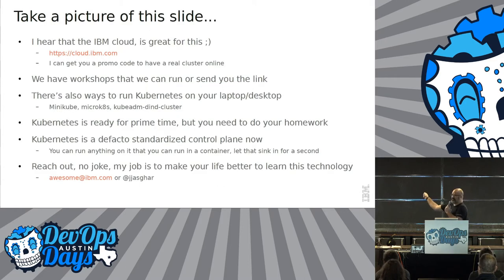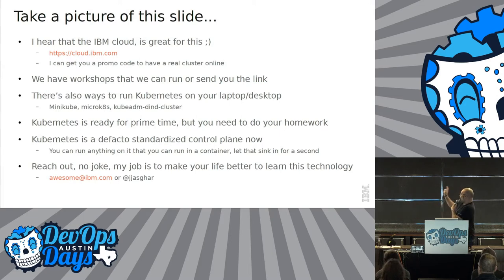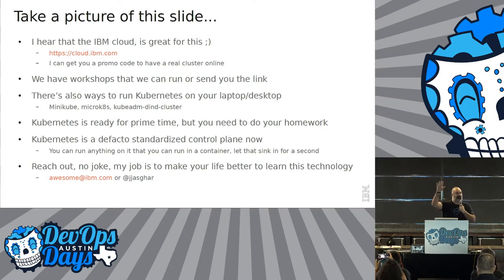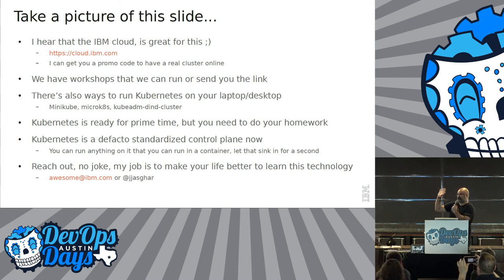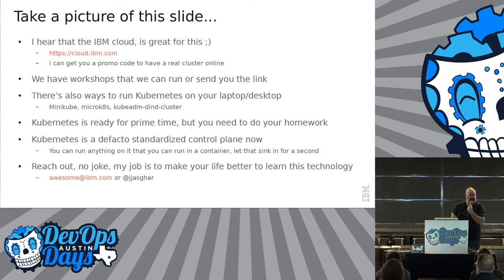And most importantly, take a picture of this slide if you're taking pictures of any of these. That's all the cool stuff I'm talking about. I work at IBM Cloud — I can give you a free Kubernetes cluster, like a production one, for about a month if you want it. Just email me at awesome@ibm.com. And also, do your homework — don't just take Kubernetes. Thank you.